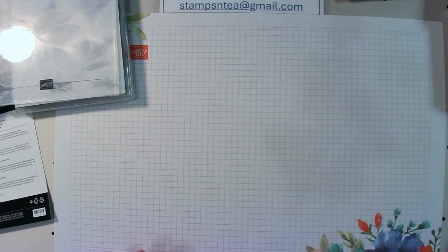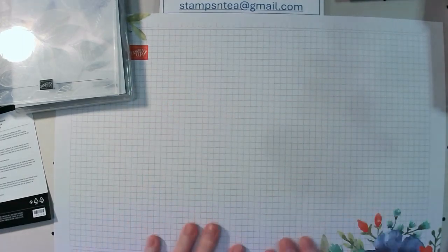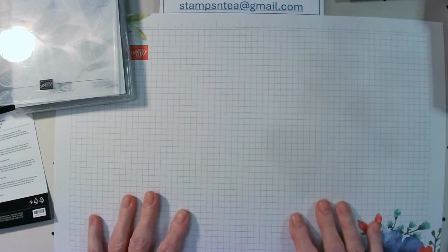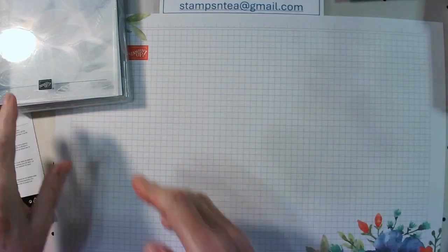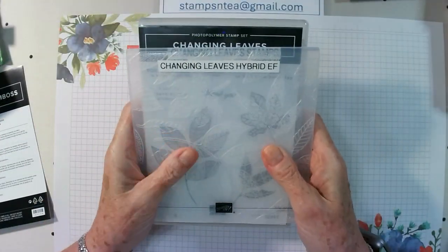Today we're going to use a small new product. It's called the Changing Leaves Suite and it's stamps, dies and a hybrid embossing folder. A hybrid embossing folder means you can emboss with it but you also get dies that overlay the embossing folder and you can cut out what you've just embossed if you want to. So let me turn the camera down and I'll show you what we're going to make today and all the parts you need to make the card.